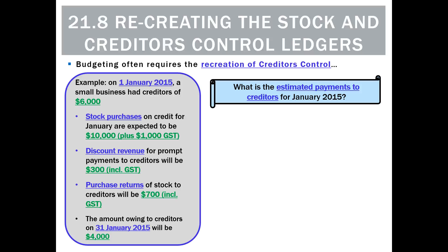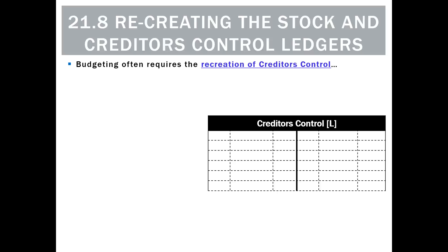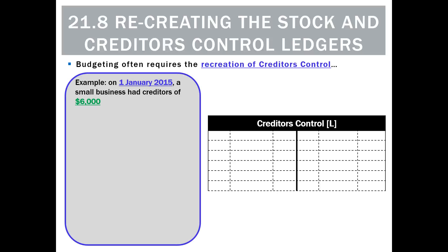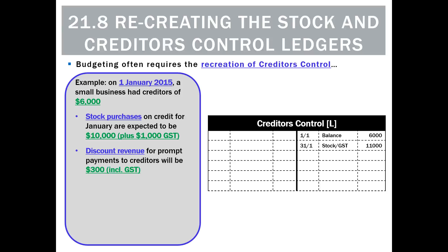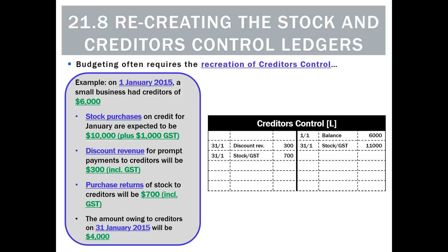To find that number we'll recreate the creditors control ledger. We start with the opening balance on the 1st of January as a credit because creditors control is a liability. Stock purchased on credit plus GST makes creditors control go up, so that's a credit. Discount revenue for prompt payments makes it go down with a debit. Purchase returns — returning stock to creditors — decreases it with a debit. We know the closing balance of creditors will be $4,000, shown as a debit on the last day then carried down as a credit of $4,000 into next period.